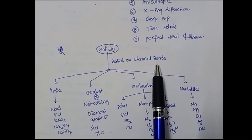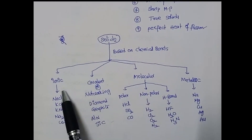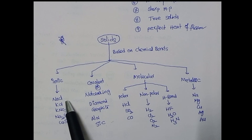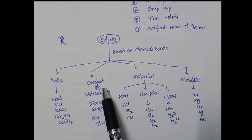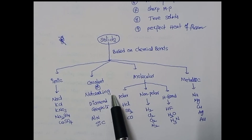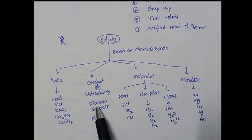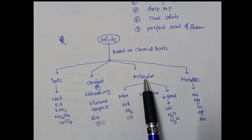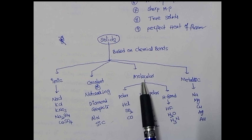Solids are also classified based on chemical bonds into four types. First, ionic solids — examples are NaCl, KCl, KNO₃, and many more. Second, covalent solids, also called network solids — examples are diamond and graphite. Compounds with large charges like aluminium nitride (Al³⁺, N³⁻) also come under network solids.